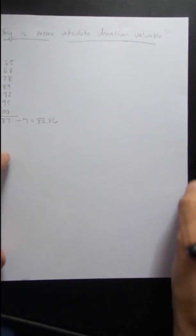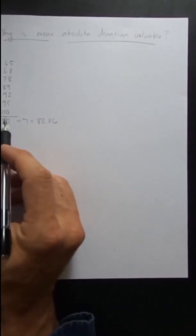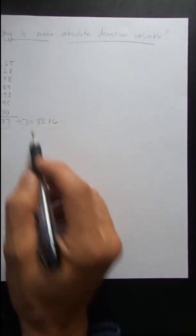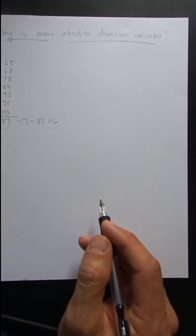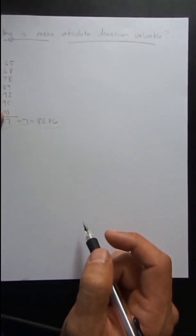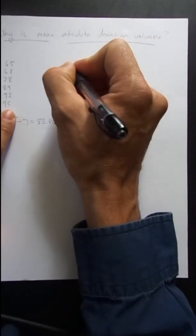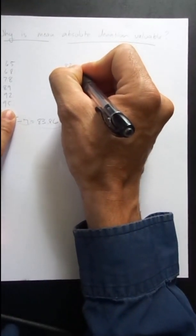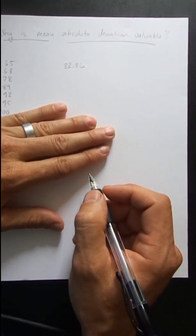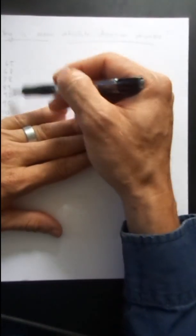You'll notice on the paper I actually wrote five eighty-seven divided by seven is eighty-three point eight six. What a lot of you are tempted to do is you see this on the calculator, you have this data set written right here, and then all you do is you write eighty-three point eight six. And if that's all you write, what have you lost? You've lost what the sum of these are, you've lost how you got there, you've lost a lot of information.